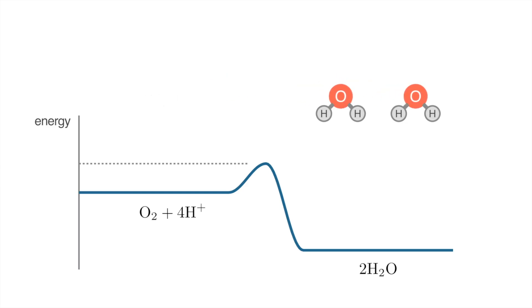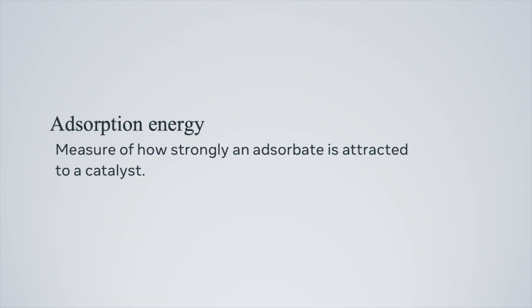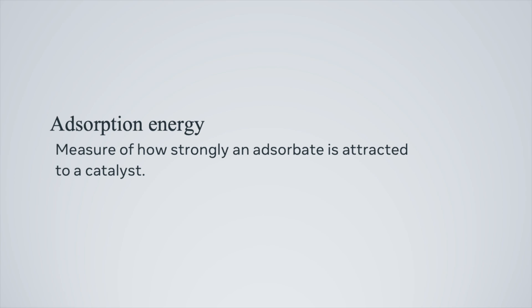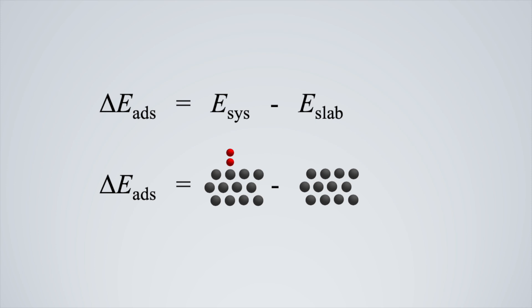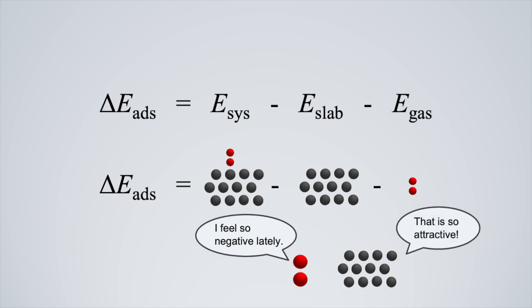Okay, so now you're probably thinking: how do we compute that activation energy given the catalyst? We're actually not going to talk about that today because computing the activation energy is actually pretty complex — maybe we'll do that in a future video. Today, we're going to instead talk about something called the adsorption energy, which you can think of as a rough approximation of the activation energy. The adsorption energy is a measure of how strongly the adsorbate — the molecule in the chemical reaction — is attracted to the catalyst. We compute the adsorption energy by taking the energy of the overall system when the adsorbate is in contact with the catalyst, and we subtract off the energy of the catalyst by itself and the adsorbate by itself when it's in the gas phase. Thus, you can view the adsorption energy as a change in energy when the adsorbate comes in contact with the catalyst. Note, a lower adsorption energy indicates that the adsorbate is more strongly attracted to the catalyst.